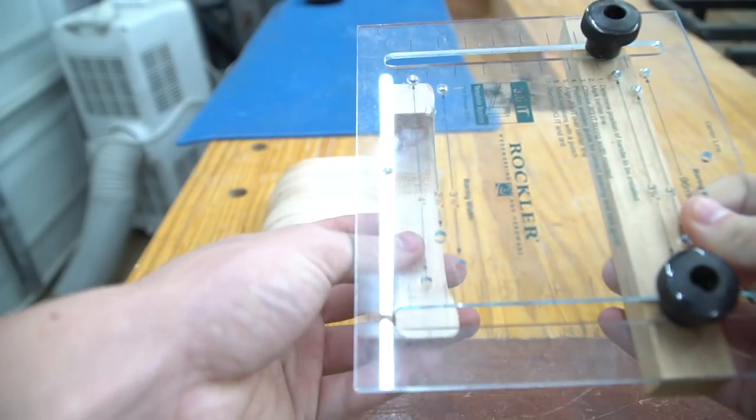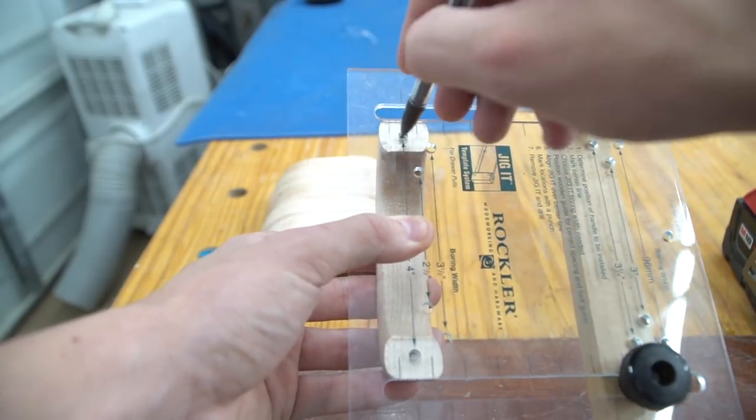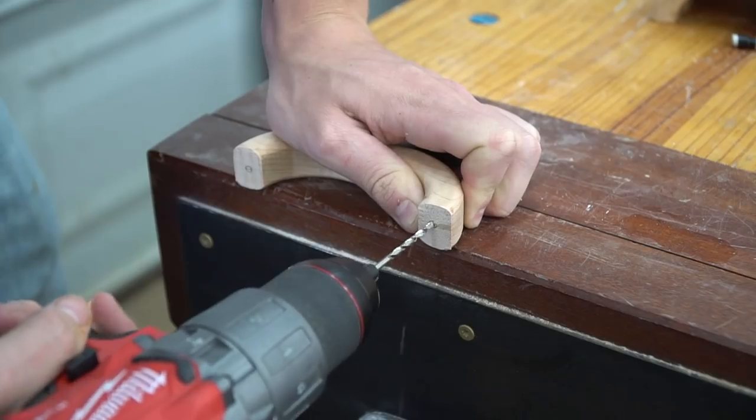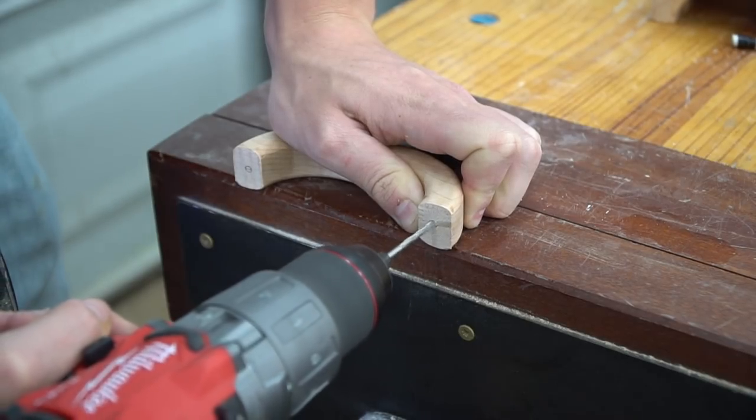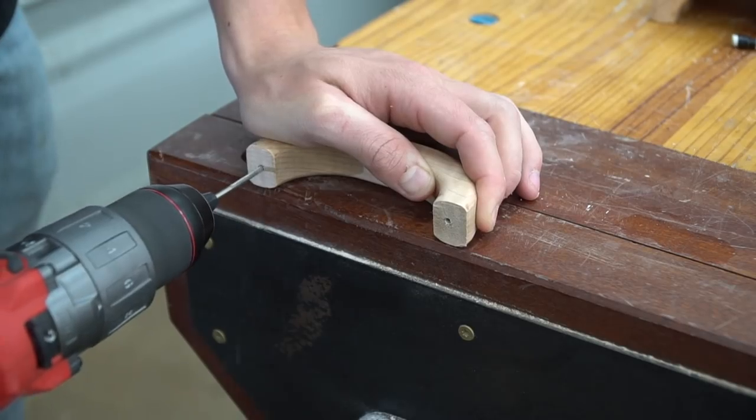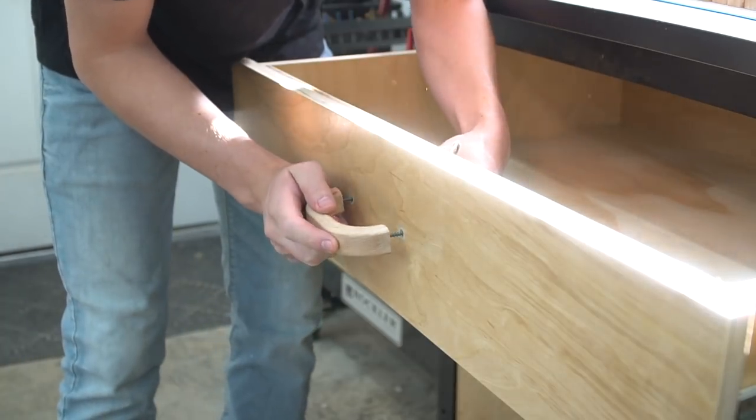We used the same Rockler jig to mark hole locations on the handles and pre-drilled the holes. Lastly, we attached all the handles to the drawers using wood screws.